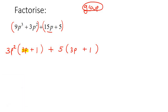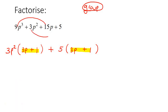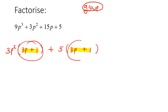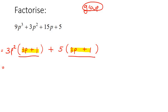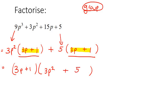Now, if these two brackets are the same, then you have grouped correctly. If they are not the same, then you have to group in a different way — you might have to try different combinations. You've got to keep going until you can make these two brackets the same. So then in the next step, you realize that 3p plus 1 is common in both. You take that out as a common factor, and you'd be left with 3p² in the first part and 5 in the second part. And there's your answer.